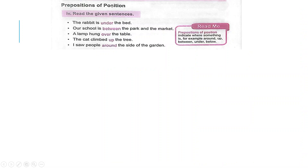Prepositions of Position. Prepositions of Position indicate where something is. For example: around, up, between, under, below.